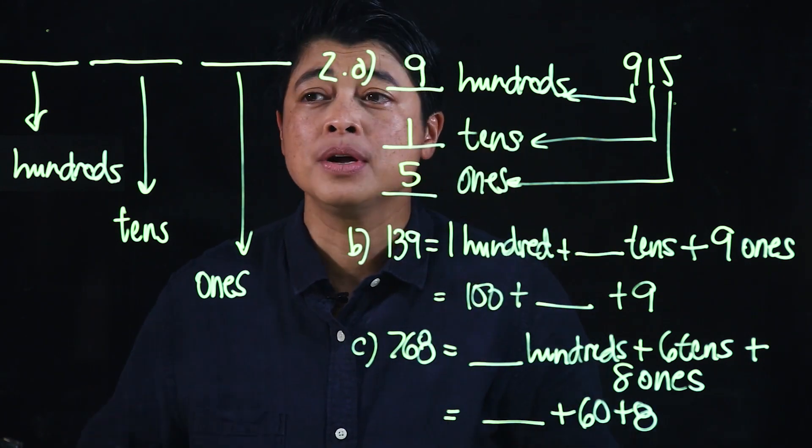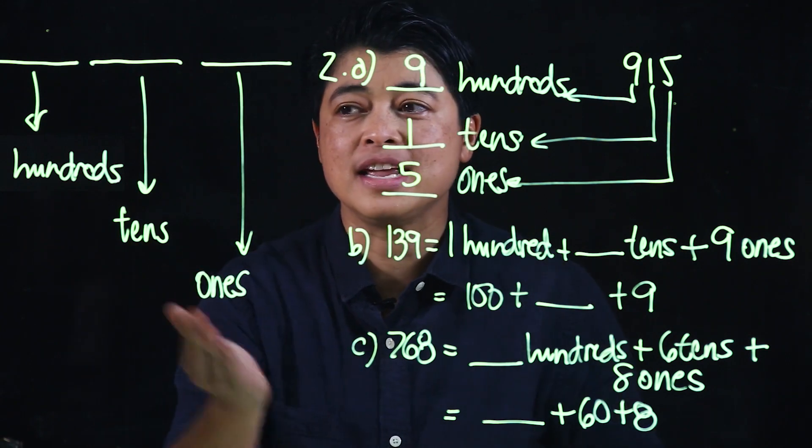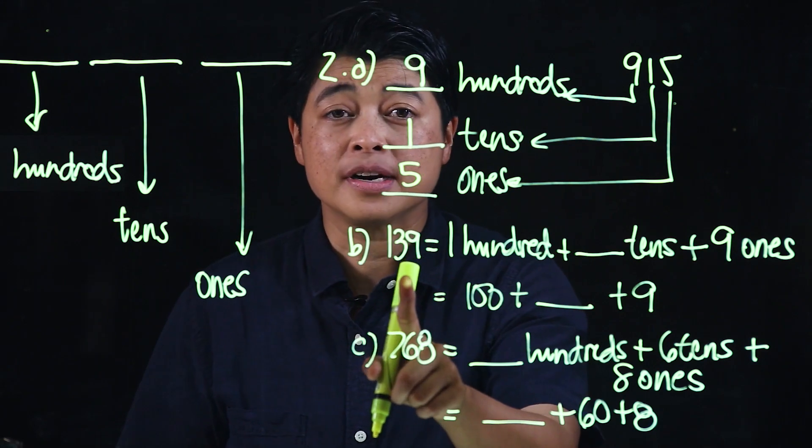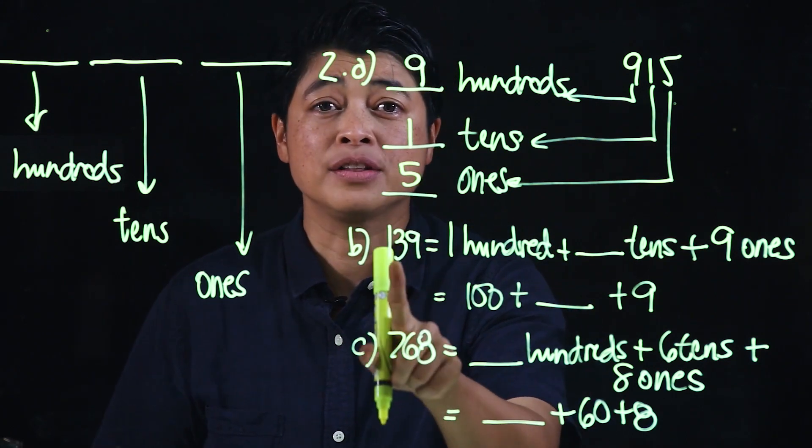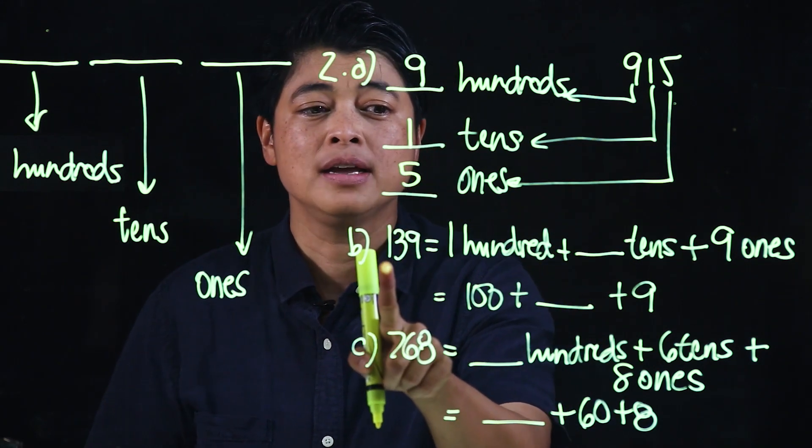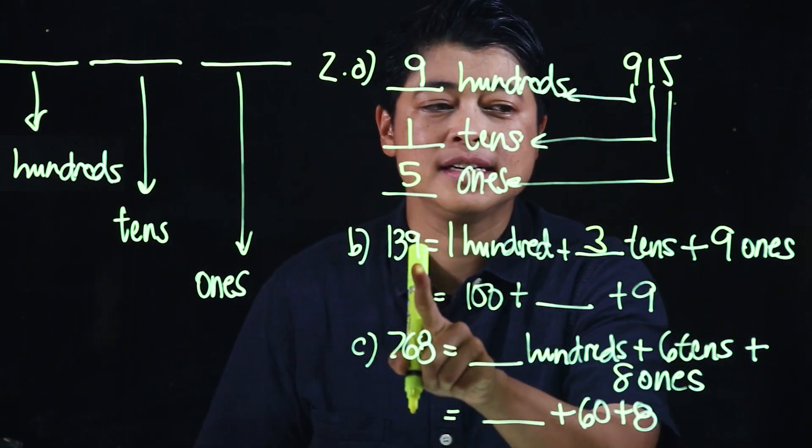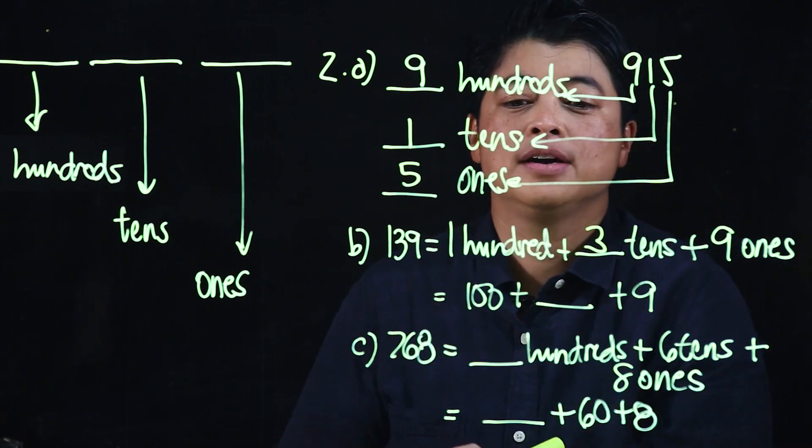Hundreds, then tens, and then ones. From the numbers they are expected to understand that this is 1 hundreds, 3 tens, and 9 ones.